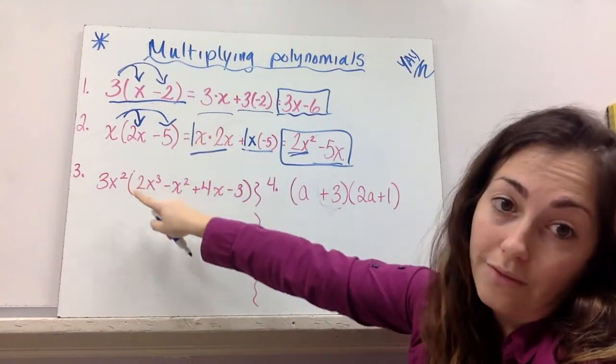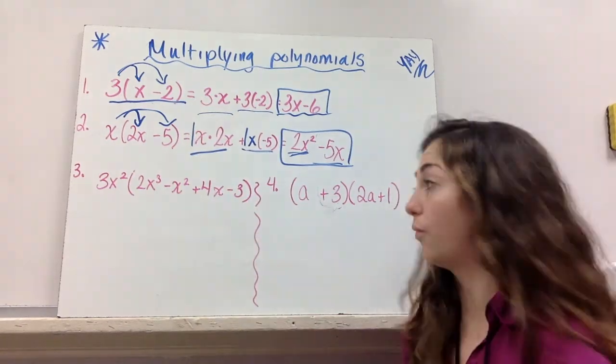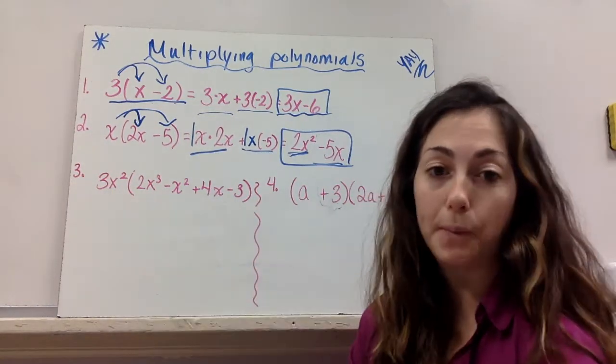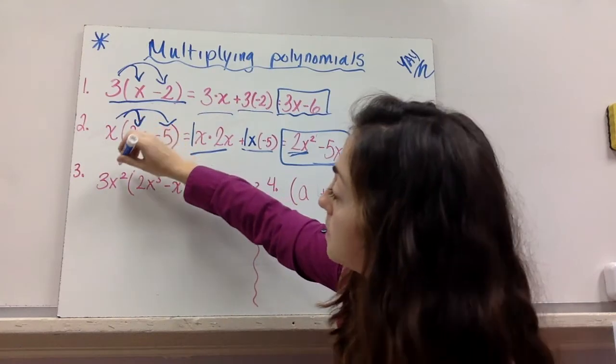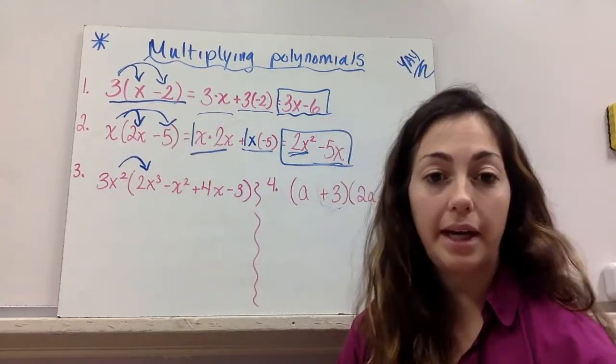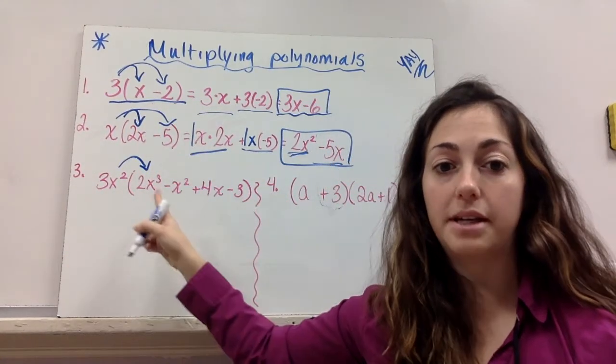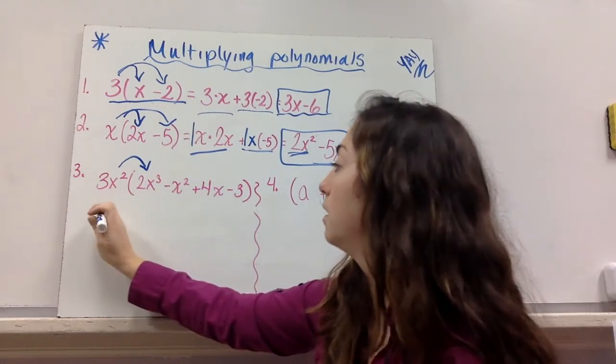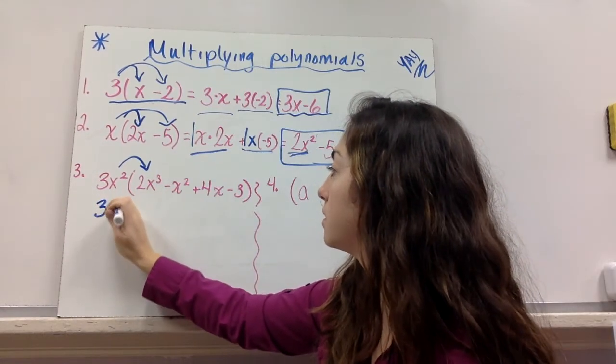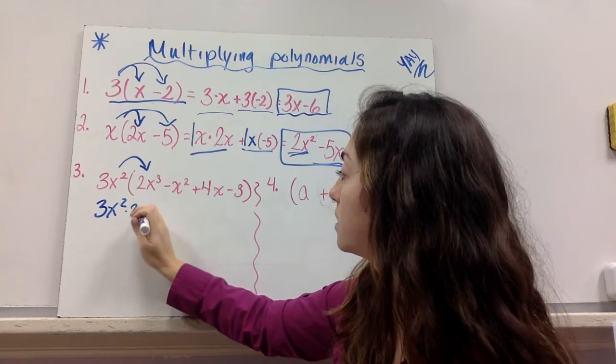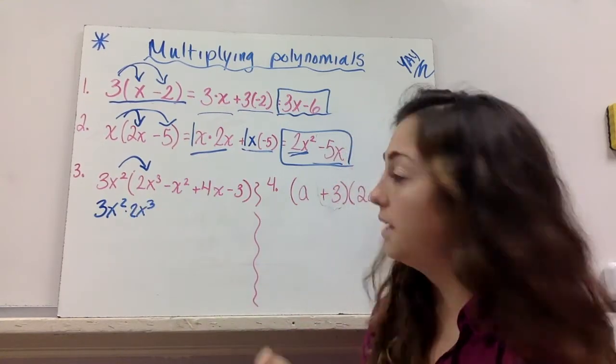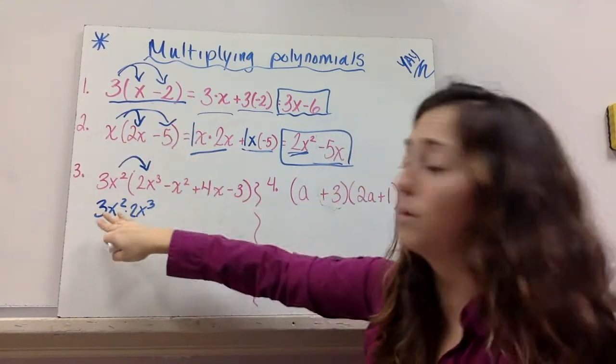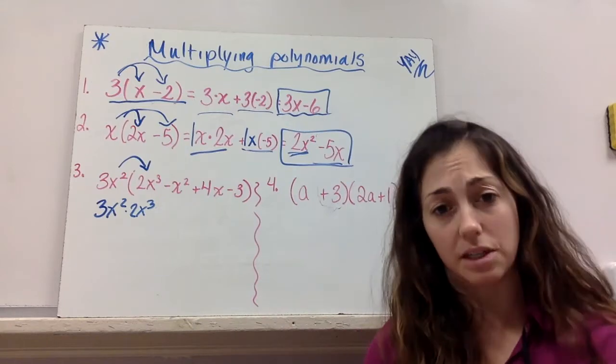If you've got 4 terms here, you're going to end up with 4 answers when it's times a monomial. So I'm multiplying that 3x squared times that 2x cubed. Then I'm multiplying, and you could multiply this before you move on. It might make it easier. Let's try that.